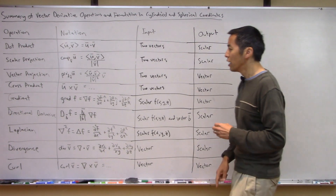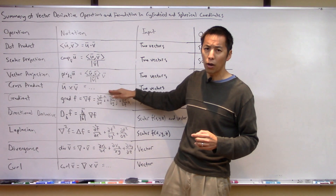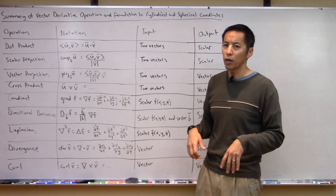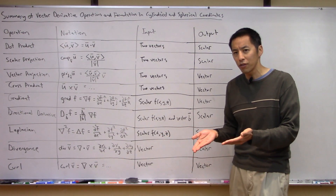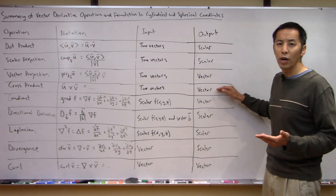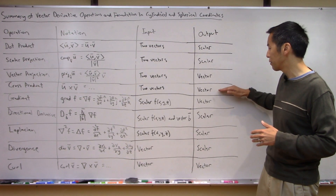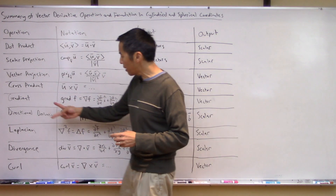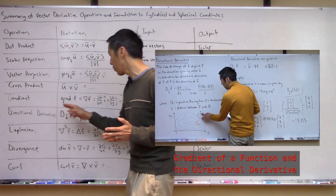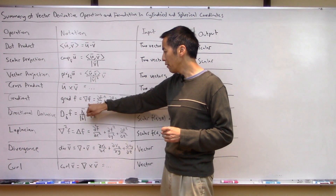The scalar projection is calculated as the dot product of u and v divided by the norm of v. Again the input is two vectors, u and v, and what comes out is a scalar — specifically the length of the projection of u onto v. We then extended that idea to the vector projection, denoted as the projection of vector u onto vector v.